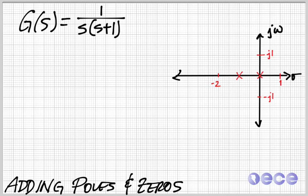If you're given a transfer function, g of s equals 1 over s times s plus 1, how do I decide how to add poles and zeros in any way that I want to?